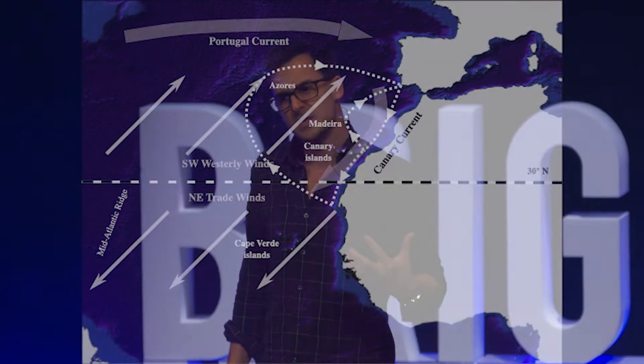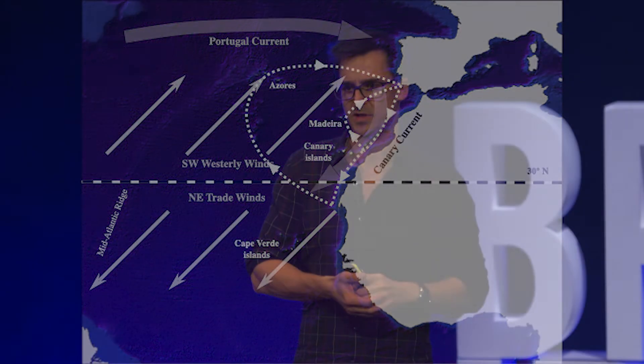No human had ever been to those islands before. They were completely and utterly uninhabited. So in these very early beginnings of the Age of Sail, these navigators were first trying to piece together the pattern of winds in different places around the Earth, the pattern of the ocean currents.